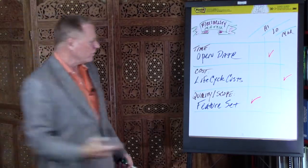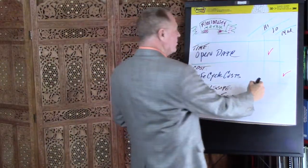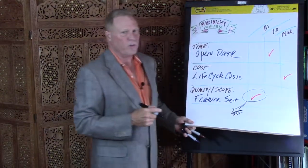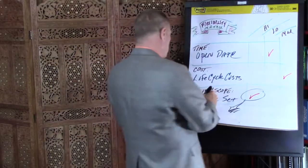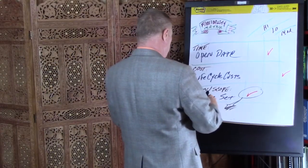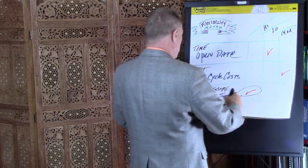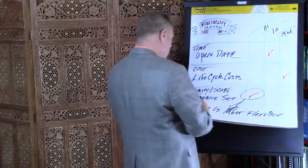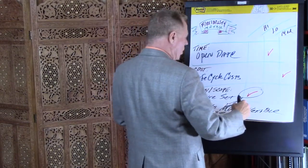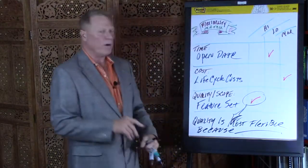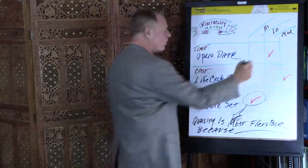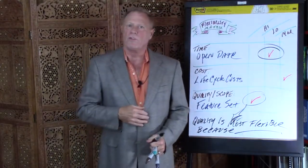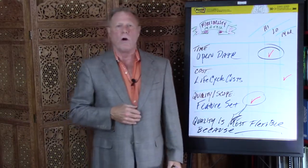We're certainly not done, however. Check marks are not going to resonate with consensus, so we need to convert these back into narrative using a facilitator's favorite word, which is the word "because." So quality, or scope, is most flexible because they don't have to have every feature they want on day one. Timing is least flexible because we can't afford to have people sitting around idle doing nothing. And, of course, that puts costs somewhere in the middle.